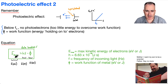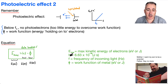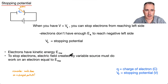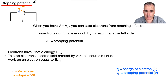So hopefully that makes some sense. We've got all our values: H is Planck's constant, we've got the frequency of the incoming light, and φ is the work function. Now this is not something formally needed, but I think it's still really important — the stopping potential.